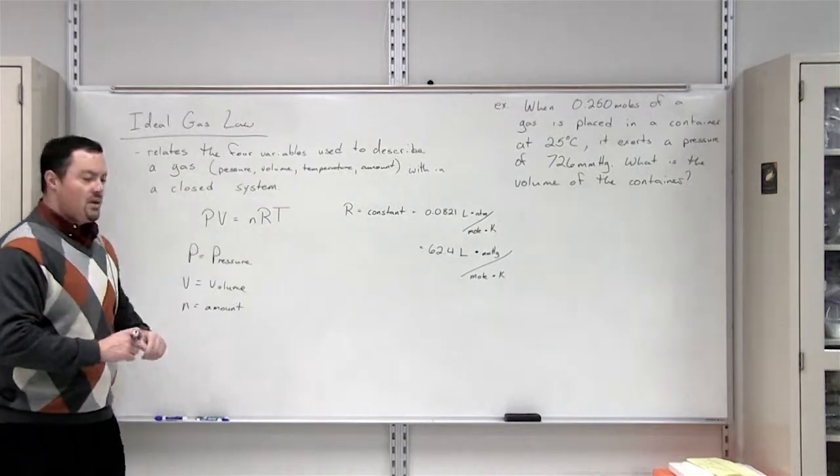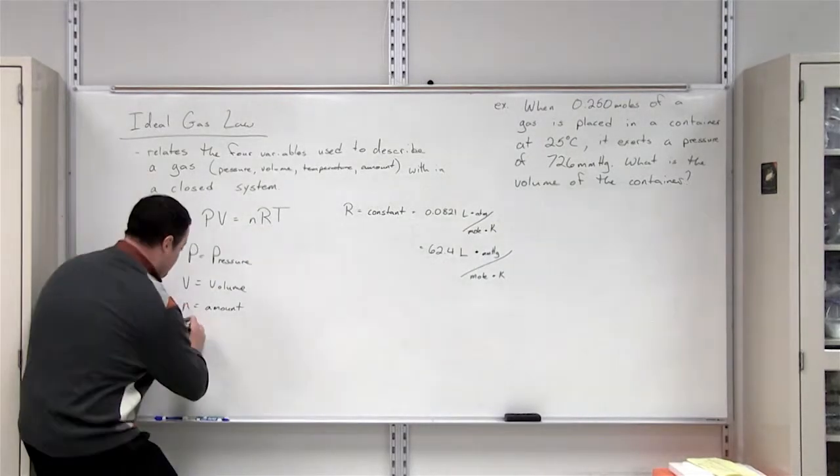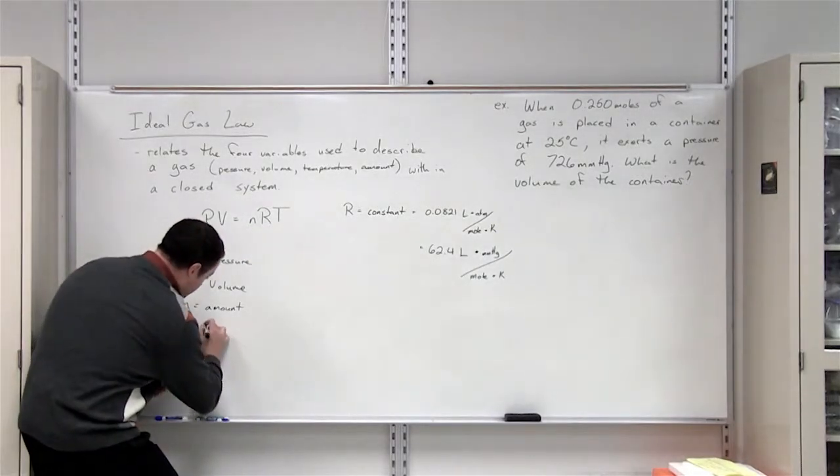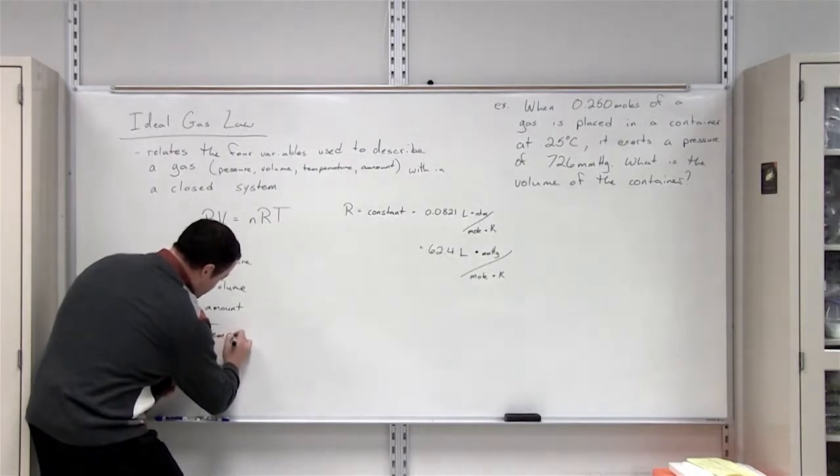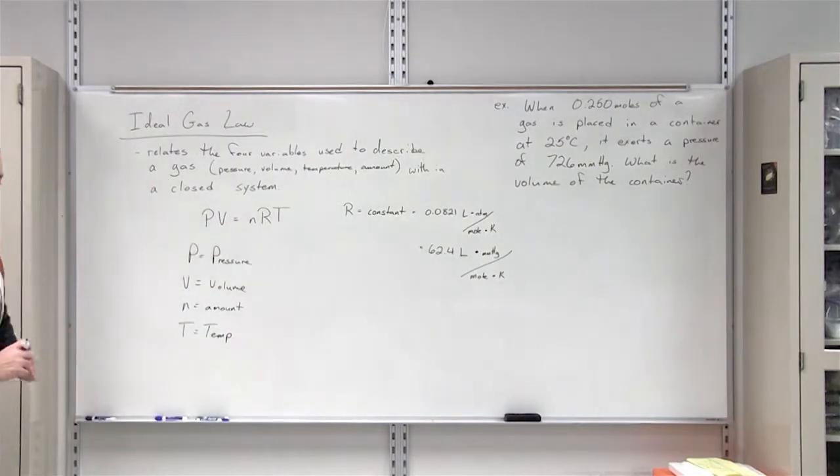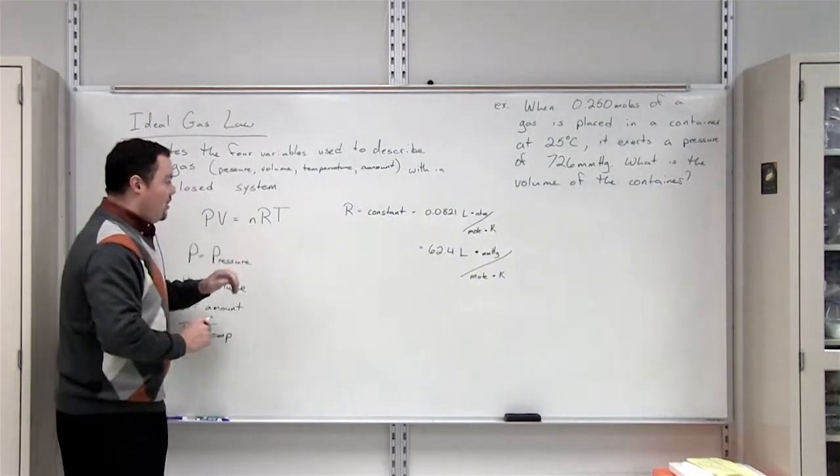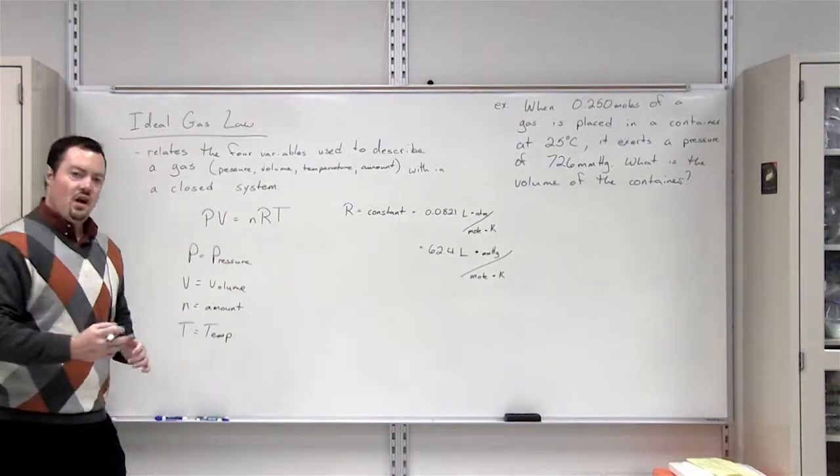The fourth variable is T, which stands for temperature. Now let's look at an example of how we're going to use the ideal gas law in order to solve a problem.